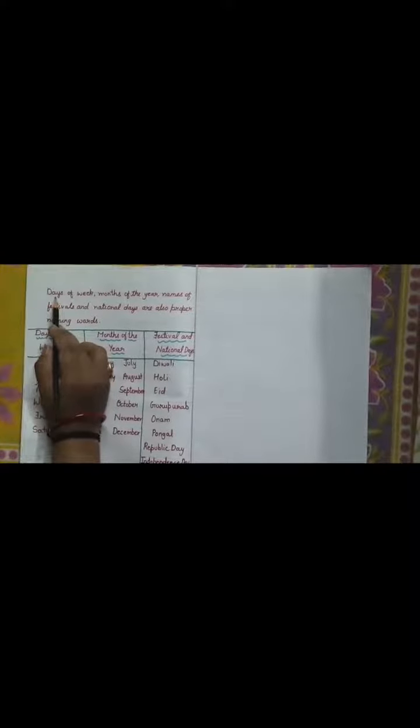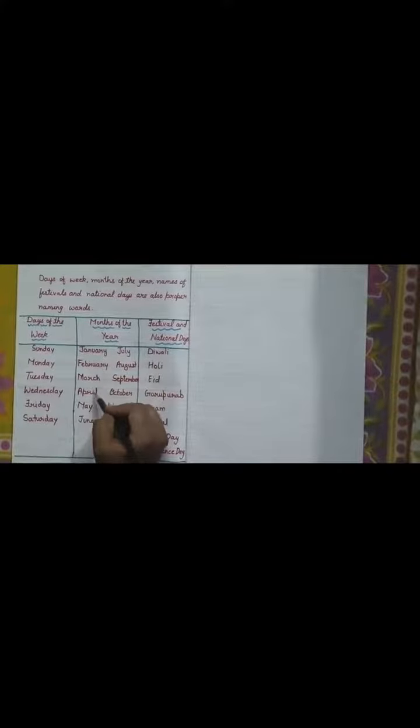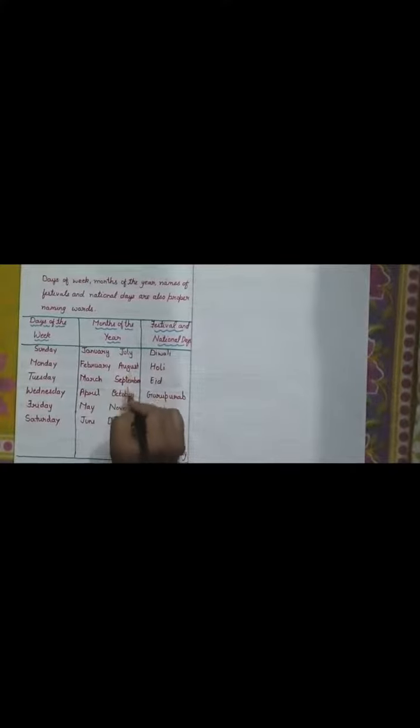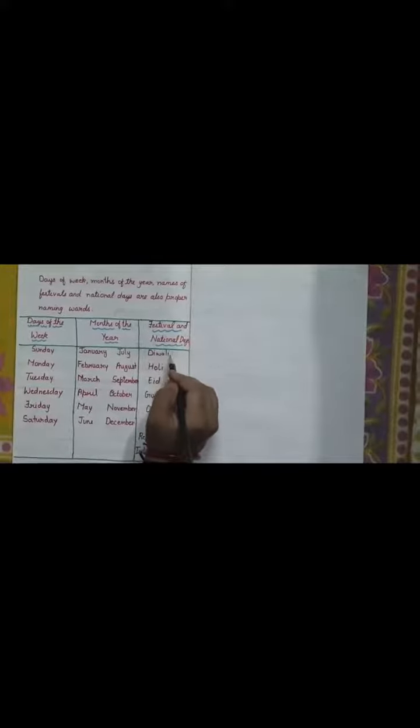In addition, days of the week, months of the year, names of festivals and national days are also proper naming words. Days of the week: Sunday, Monday, Tuesday. Months of the year: January, February, March, April, May, August, October, December. Festivals and National Days: Diwali, Holi, Republic Day, Independence Day. These all are also proper naming words.